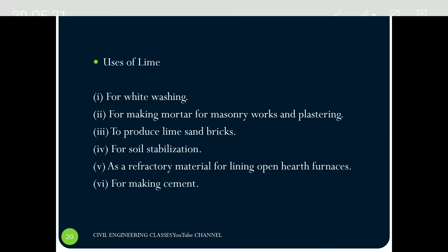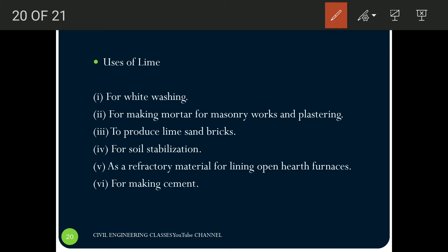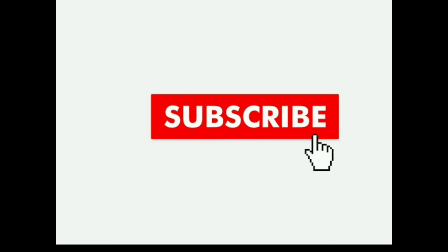Coming to the uses of lime: it is used for whitewashing purposes, for preparation of mortar in masonry work and plastering, and for the production of lime bricks. An important application is soil stabilization — the chemical reaction behind that will be discussed in the geotechnical chapters. Lime is also used as a refractory material in the lining of open-hearth furnaces, and for the making of cement.